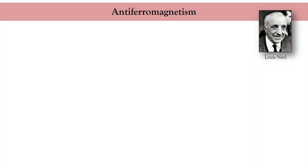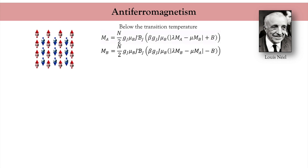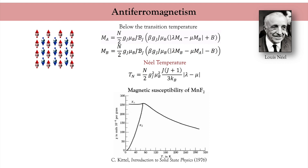We now turn to a second class of magnetic materials called antiferromagnets. This is a particular case of the ferrimagnets just discussed: the two magnetic sublattices have exactly the same properties, so there is no overall magnetization despite the total magnetic order. Each sublattice can be described by a Brillouin function, and we obtain the transition temperature T_N. This temperature at which the magnetic order vanishes is called the Néel temperature, after Louis Néel who first investigated this class of materials. To illustrate this, I use a famous graph from Kittel's textbook showing the susceptibility of manganese difluoride, a collinear antiferromagnet with a Néel temperature of 70 K.